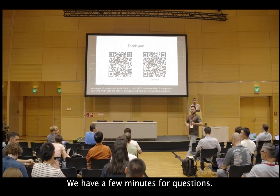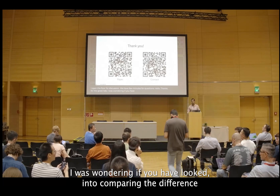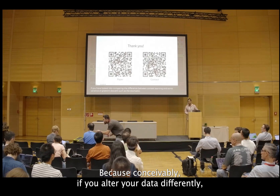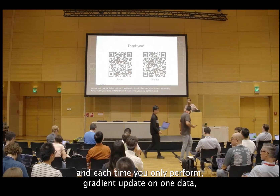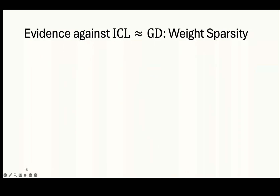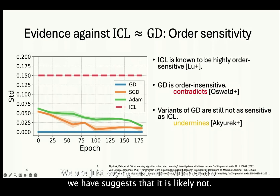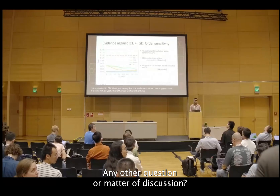Thank you. We have a few minutes for questions. The first question: 'Have you looked into comparing in-context learning with stochastic variants of gradient descent? Conceivably, if you order your data differently and perform a gradient update on one datum at a time, that could lead to some form of order sensitivity.' If you look at the order sensitivity of SGD as well as Adam, it is still quite less sensitive than ICL. So we are not claiming that ICL is definitely not equivalent to GD — we are just saying that the evidence we have suggests it is likely not.